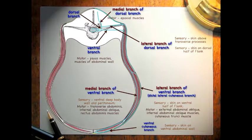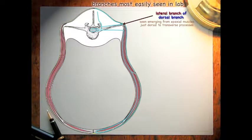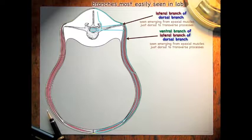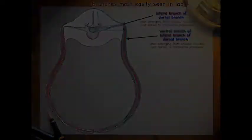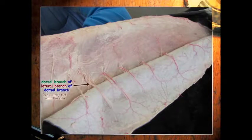The branches that are most easily seen will be the lateral branch of the dorsal branch; you'll see that emerging from the epaxial muscles just dorsal to the transverse processes. In some specimens the ventral branch of the lateral branch may also be seen. Basically the dorsal branch of the lateral branch is going to be removed with the skin. Here is an image showing the dorsal branch and the lateral branch going to the skin, and as you can see, when we remove the skin that is easily torn.